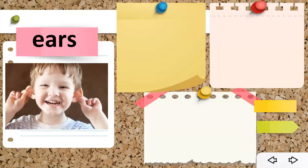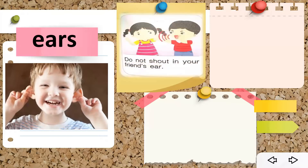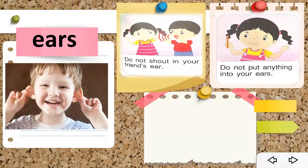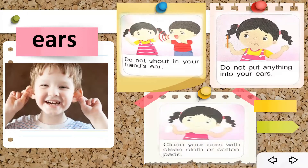We have two ears. How do we take care of our ears? First, do not shout in your friend's ear. Next, do not put anything into your ears because you might damage your eardrums. Also, clean your ears with a clean cloth or cotton pads — do it gently and slowly.